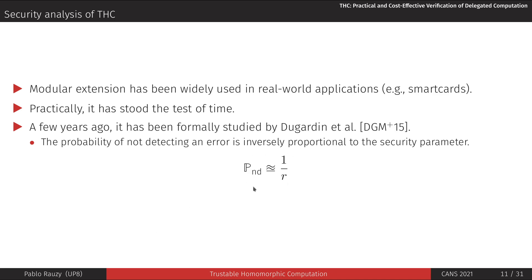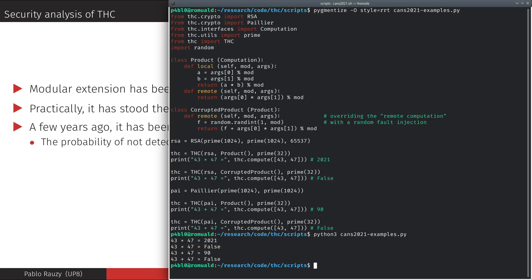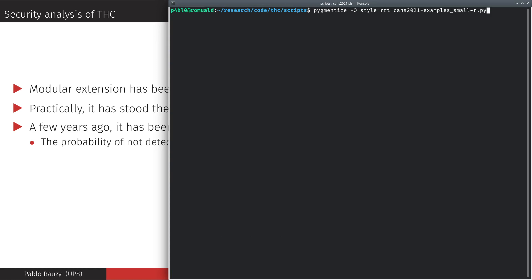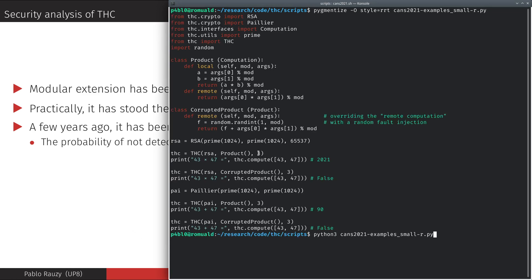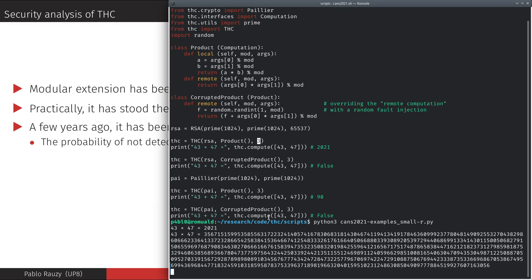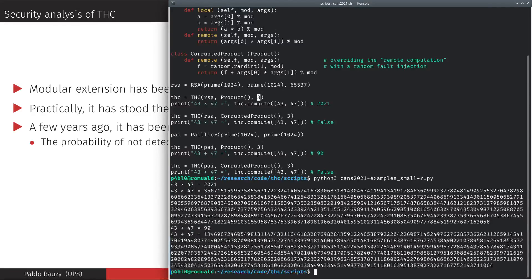This means that choosing a very small value for R will make THC miss corrupted computations. Here is a script similar to the previous one, except that it uses the value 3 for R. As we can see, corrupted results are not always detected with such a small R.